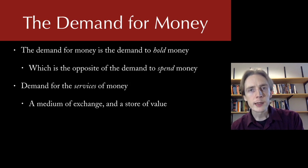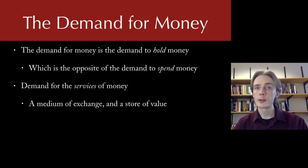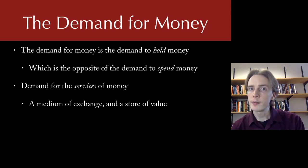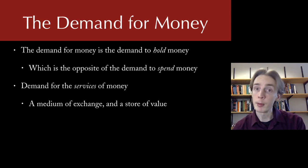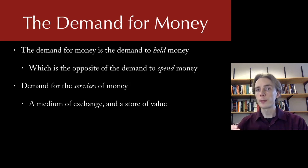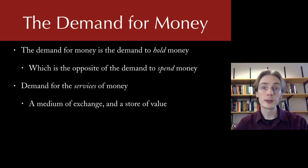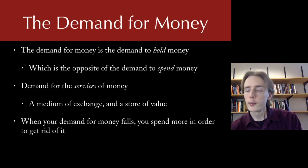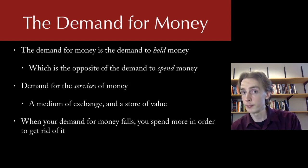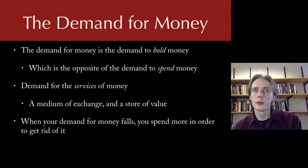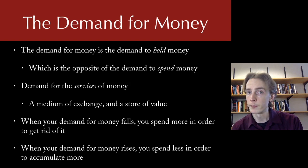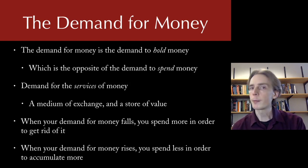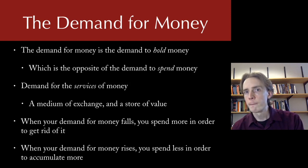To get through life you need some amount of media of exchange, so you demand money today to spend it tomorrow. People also demand stores of value — saving some amount, relatively available. When your demand for money falls, you demand to hold less, so you spend it and your demand for goods increases. When your demand for money rises, you stop spending and let your money balances accumulate. Your demand for goods falls when your demand for money rises.